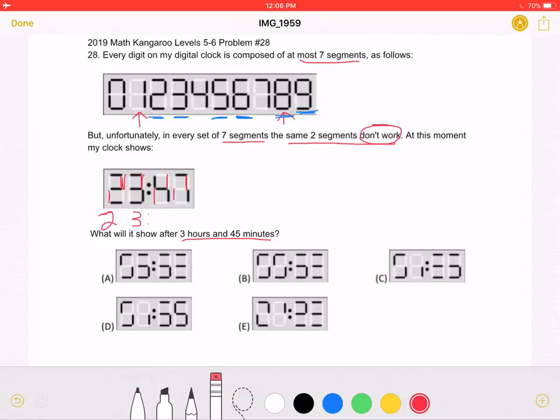And then the next number must be 4, and the number after that must be 7. So the time showed is 23:47.